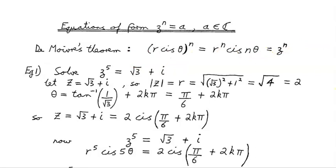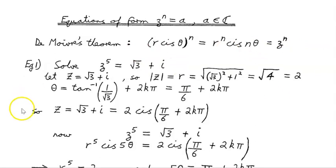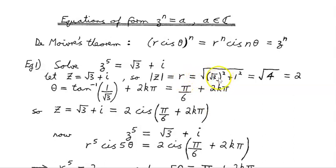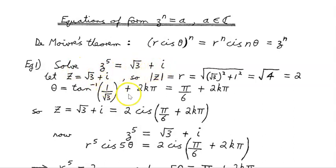What we want to do now is solve the equation z to the power of 5 equals √3 + i. We start by letting Z equal √3 + i. The modulus r is the square root of (√3)² + 1², which gives us the square root of 4, which is 2. Theta is inverse tan of 1 over √3, so we're turning this into cis θ form.